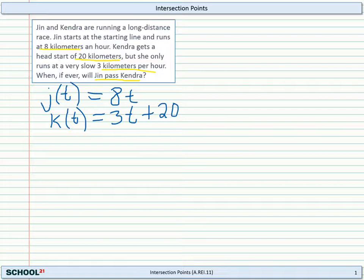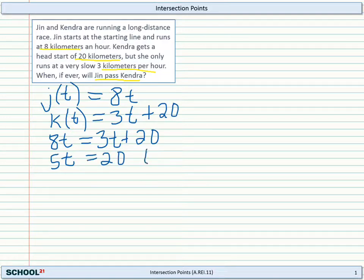So now the question is, when do these two distances equal one another? What we do is we just set the two functions equal to each other. J of T equals K of T. And so we can take J of T, we know that's equal to 8T, and we set that equal to K of T, which is 3T plus 20. Then we can subtract 3T from both sides, and that will give us 5T equals 20. Divide by 5, and we see that T equals 4.